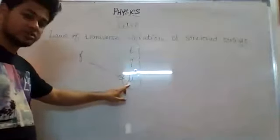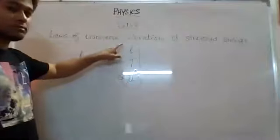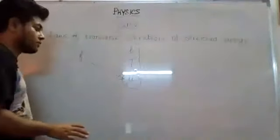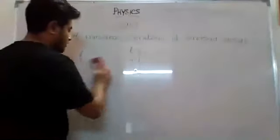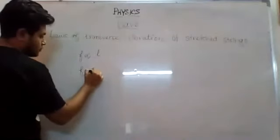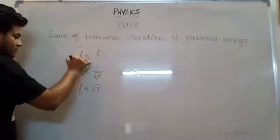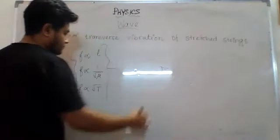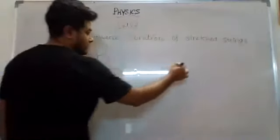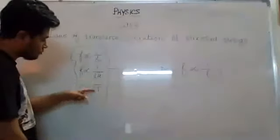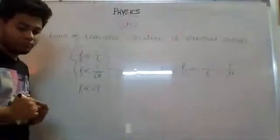If I want to find the relationship with L, I keep tension and mu fixed. If I want to find the relationship with T, I keep length and mass per unit length fixed. So we saw: f is proportional to 1/L, f is proportional to 1/√mu, and f is proportional to √T. Combining them, f is proportional to (1/L) × √(T/mu).